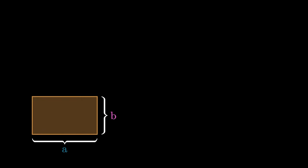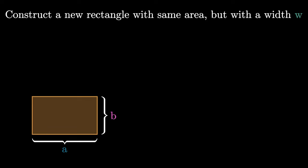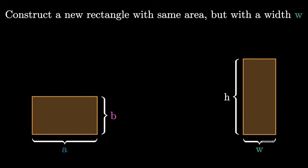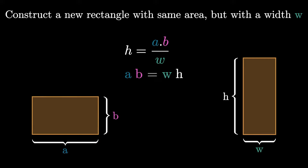If I give you a rectangle of size A by B and ask you to construct a new rectangle of same area but with a width of say W units, what would the height of that new rectangle be such that the area is preserved? Equating the areas of two rectangles, the height of the newly constructed rectangle is a function of the original area, A times B divided by the width W.